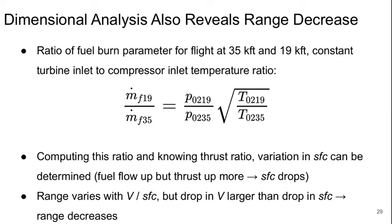We can also look at our dimensional analysis to tell us what happens to the range of the aircraft when we change to this single engine operation. We can look at our fuel burn parameter for flight at 35,000 feet versus flight at 19,000 feet, maintaining our constant turbine inlet to compressor inlet temperature ratio. The fuel rate ratio is related to the stagnation pressure ratio and the square root of the total temperature ratios. We can compute this ratio and knowing our thrust ratio, the variation in the specific fuel consumption can be determined. The fuel flow actually increases, but the thrust goes up more, so the specific fuel consumption actually goes down. But the range varies with the velocity divided by the specific fuel consumption, and it turns out the drop in velocity is bigger than the drop in SFC, so the range goes down.